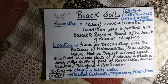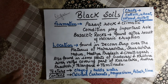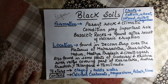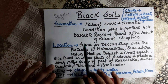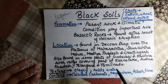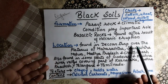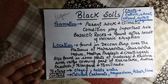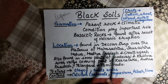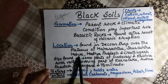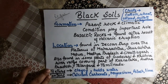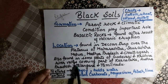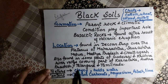Formation: the parent rock and climatic conditions play a very important role. The basaltic rocks, which are found as a result of volcanic eruption in the Deccan Trap, are responsible for black soil. Location: it is spread over the plateaus of Maharashtra, Saurashtra, Malwa, Madhya Pradesh, and Chhattisgarh. It is also found in some parts of the Godavari and Krishna river valleys, covering parts of Karnataka, Andhra Pradesh, Telangana, and Tamil Nadu.